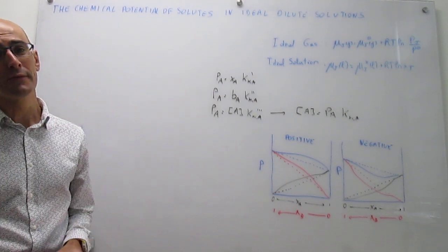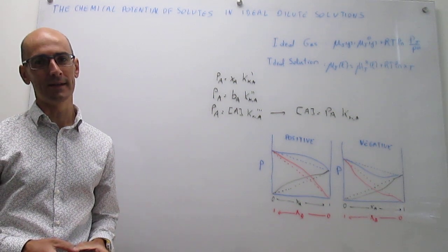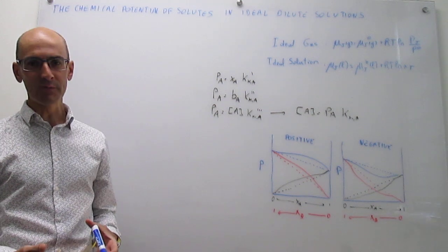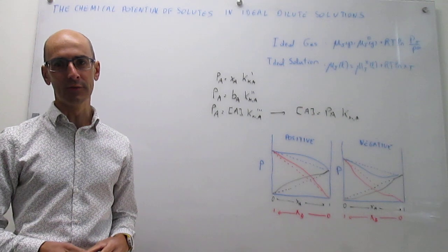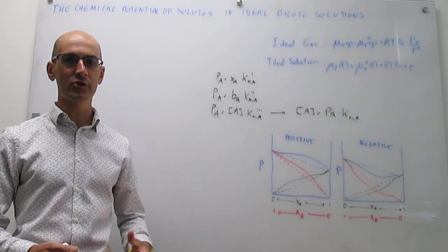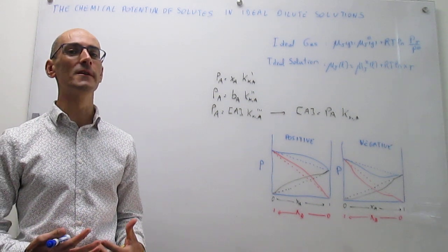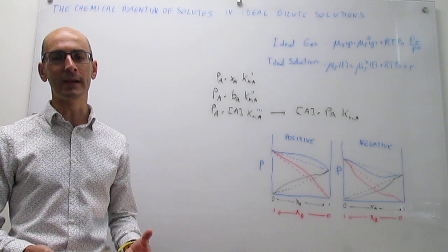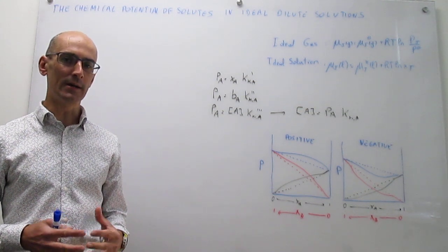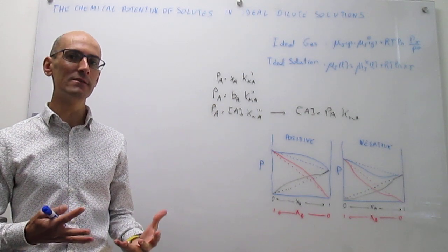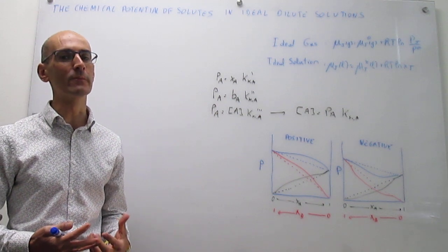In this video we derive an expression for the chemical potential of a solute in an ideal dilute solution. We're trying to write the chemical potential of various species that might participate in a chemical reaction or in a mixture as a function of the concentration of that species. This is very useful because it's going to allow us to understand the stability of mixtures, the properties of mixtures, and also chemical equilibrium, which is very important.